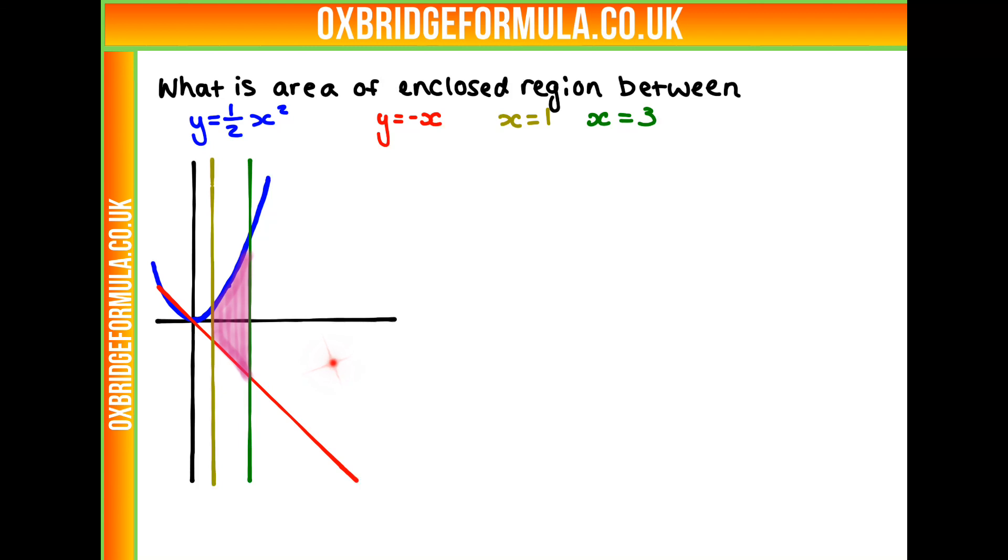To make it easier for us, let's split this up into two sections: the one above the x-axis, which we'll call A, and the one below, which is B.